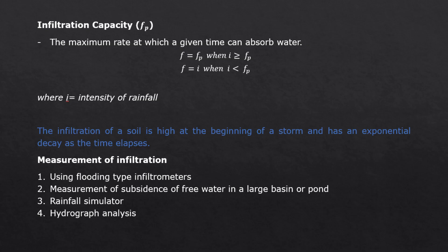Let's talk about infiltration capacity. It is the maximum rate at which a given time can absorb water. Take note here that infiltration only takes place at capacity rates only when the intensity of rainfall I equals or exceeds Fp. So when I is greater than or equal to Fp, the infiltration rate is equal to Fp. However, when I is lesser than Fp, then the actual infiltration rate is lesser than Fp, and so F is just assumed to be equal to I. It is also important to note that the infiltration of a soil is high at the beginning of a storm and has an exponential decay as the time elapses.